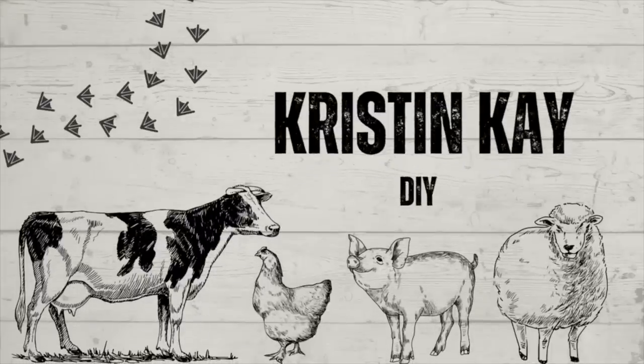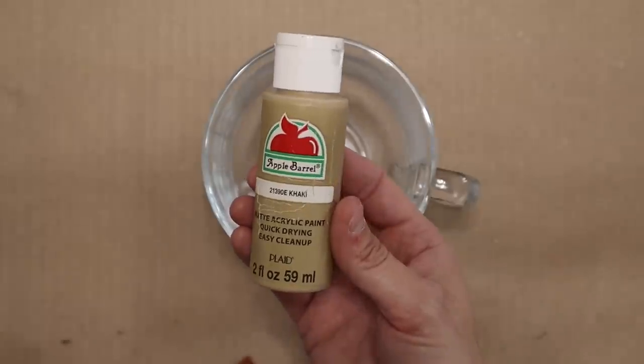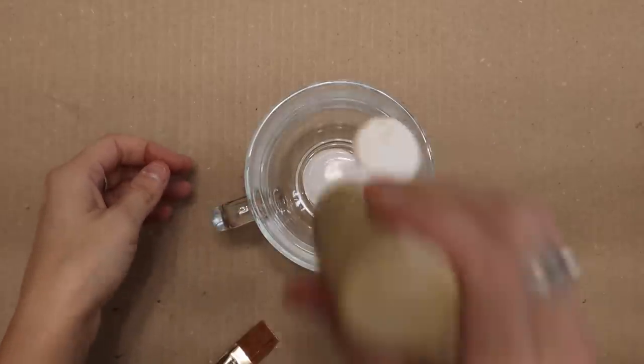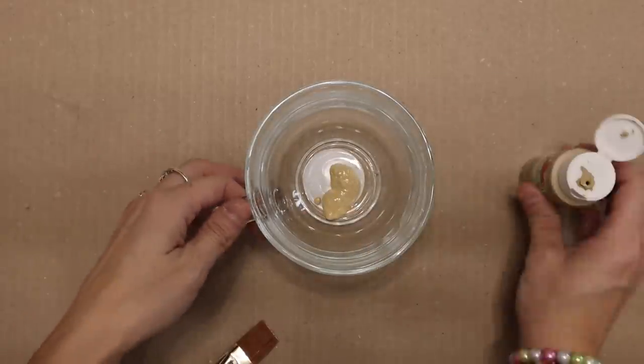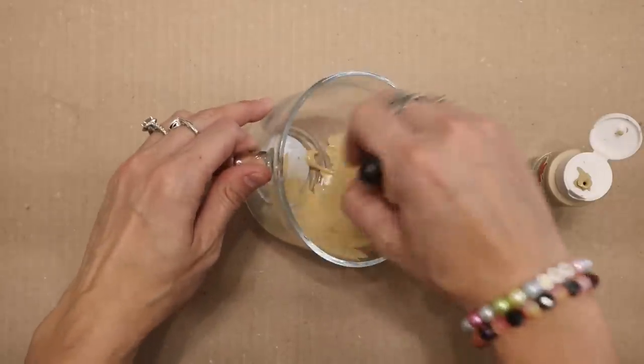I'm Kristen and today I'm going to be doing some glass hacks with Dollar Tree products. For this first one I'm using this color khaki by Apple Barrel paint and I'm going to be using this mug that I picked up at Dollar Tree recently.